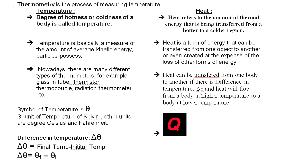Students of physics, remember: if there is a difference in temperature, then there will be a transfer of heat. The symbol for heat is Q. Q is a form of energy; therefore, it is measured in joules. All forms of energy are measured in joules.